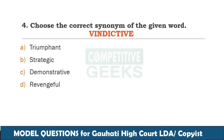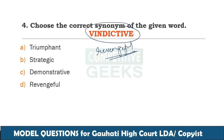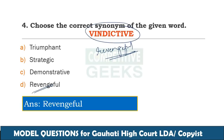The next word is vindictive. Vindictive means having a strong desire for revenge — revengeful behavior. The synonym is revengeful. Another synonym is unforgiving.